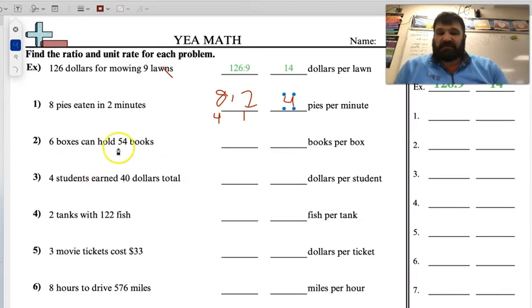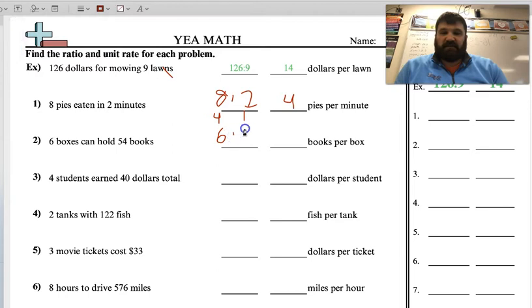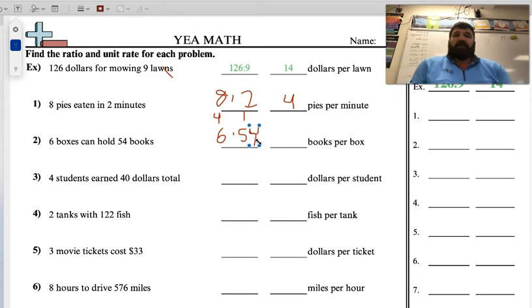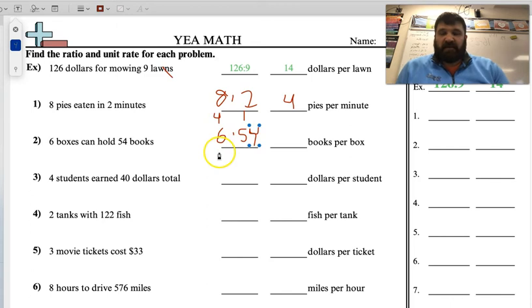Go ahead and do number 2. 6 boxes can hold 54 books, so if there are 6 boxes, they can hold 54 books. So then the question is, how many books per box? Well, we can simplify that again. 6 goes into 6 once.